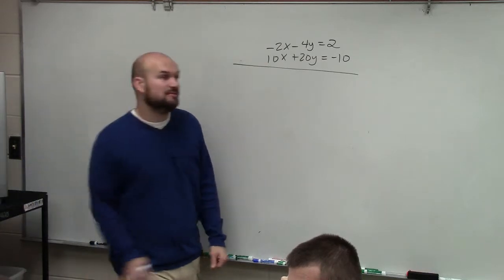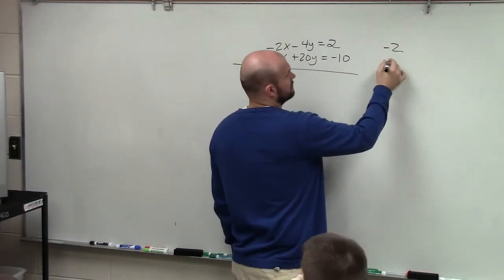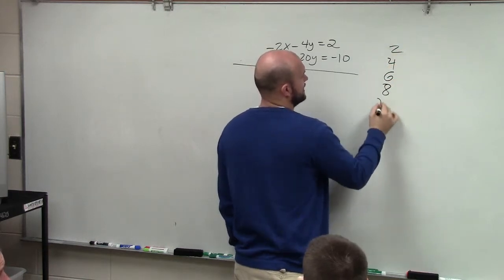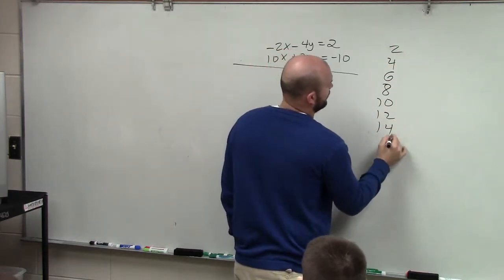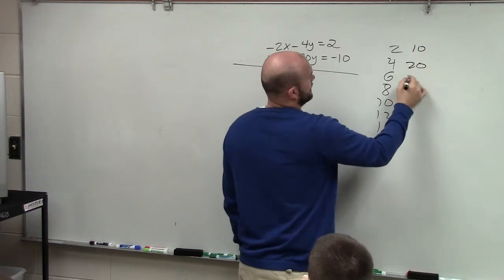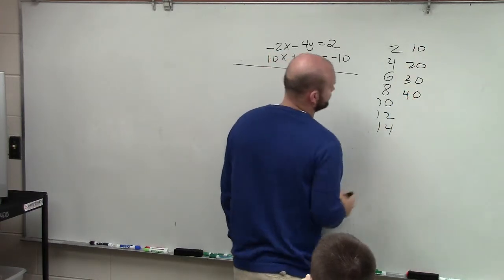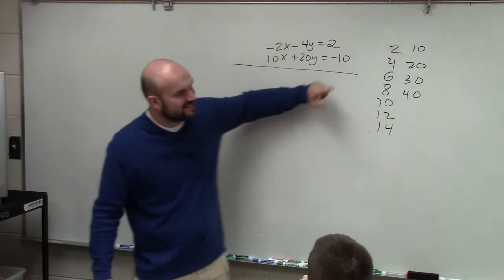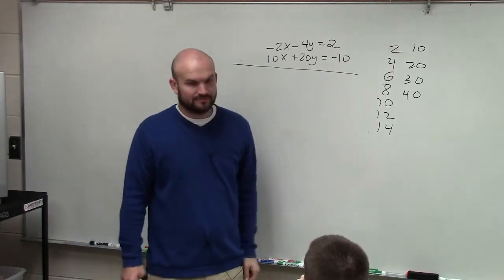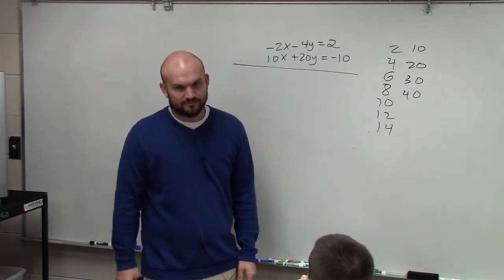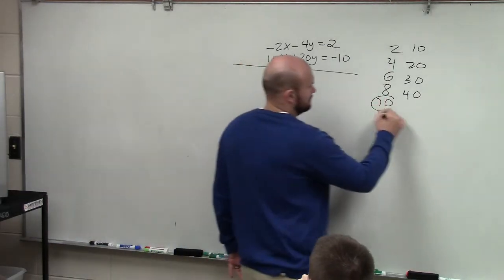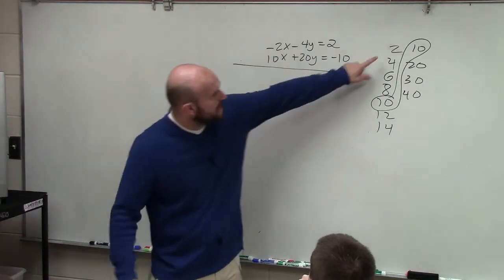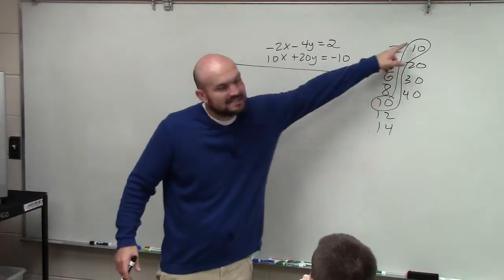Let's list the multiples. For 2: 2, 4, 6, 8, 10, 12, 14. For 10: 10, 20, 30, 40. What is the smallest number that 2 and 10 divide into? What is the smallest number they share as their multiples? 10. That's the smallest number that both 2 and 10 divide into. Make sense?